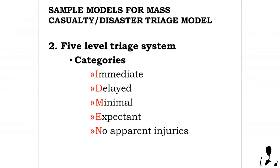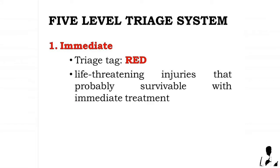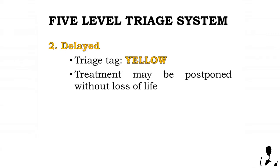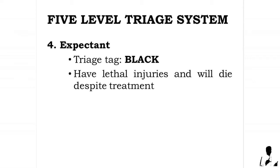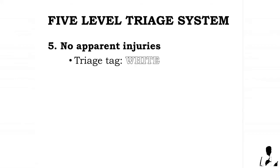The Five-Level triage system has the following categories: 1) Immediate — triage tag color red, for life-threatening injuries that are probably survivable with immediate treatment; 2) Delayed — triage tag color yellow, where treatment may be postponed without loss of life or limb; 3) Minimal — triage tag color green, for patients requiring little or no professional care, who are ambulatory and can self-treat or seek alternative medical attention independently; 4) Expectant — triage tag color black, for patients with lethal injuries who will die despite treatment; and 5) No Apparent Injuries — triage tag color white.